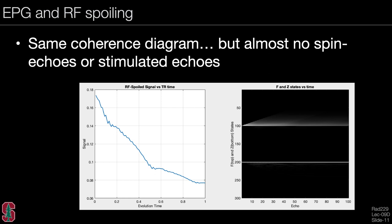Using EPG to model RF spoiling looks very similar to gradient spoiling with the same coherence pathway diagram, but with almost no spin echoes or stimulated echoes. Looking at the coherence pathway populations, there is almost no signal in the F-minus states and almost no signal in the higher order Z states.